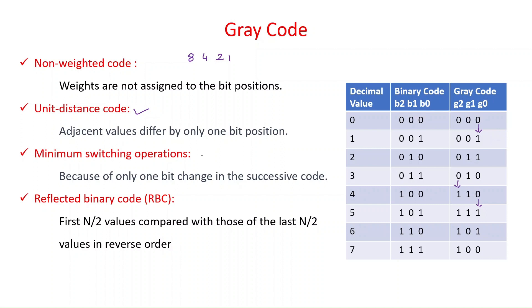Grey code requires a minimum number of switching operations because only one bit changes in each successive code. In binary code, representing 3 as 011 and 4 as 100 requires three bit changes: B2, B1, and B0 all change. But in grey code there is only one bit change per transition. In binary code the number of switchings is not fixed — sometimes 1, sometimes 3. This minimum switching is a key advantage of grey code.